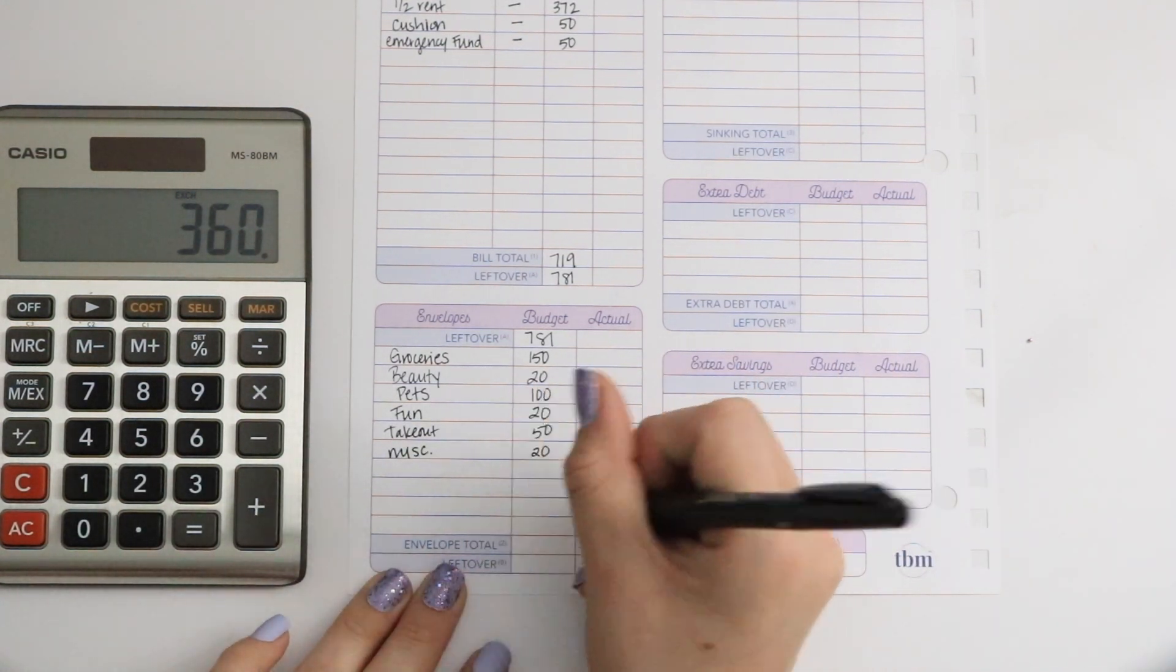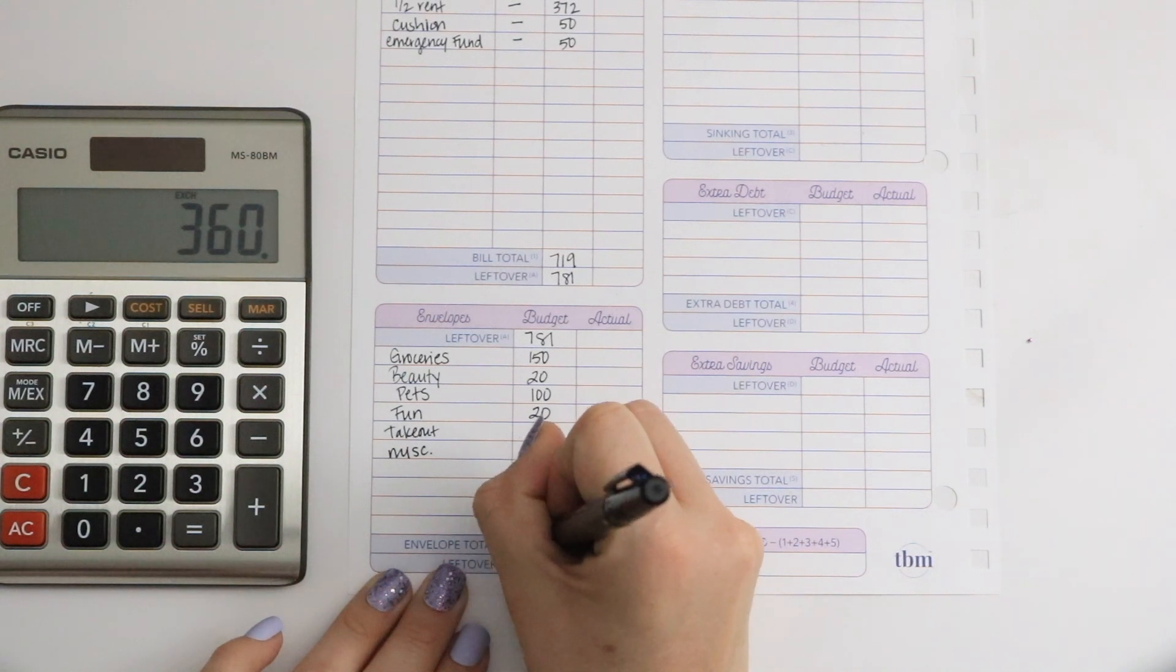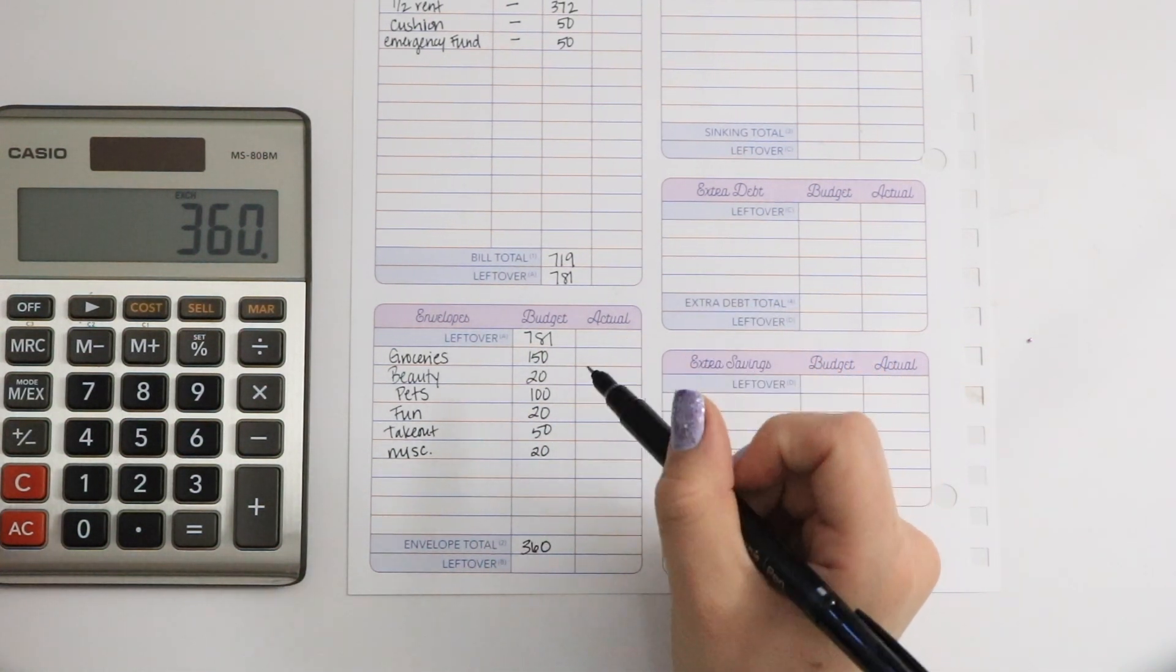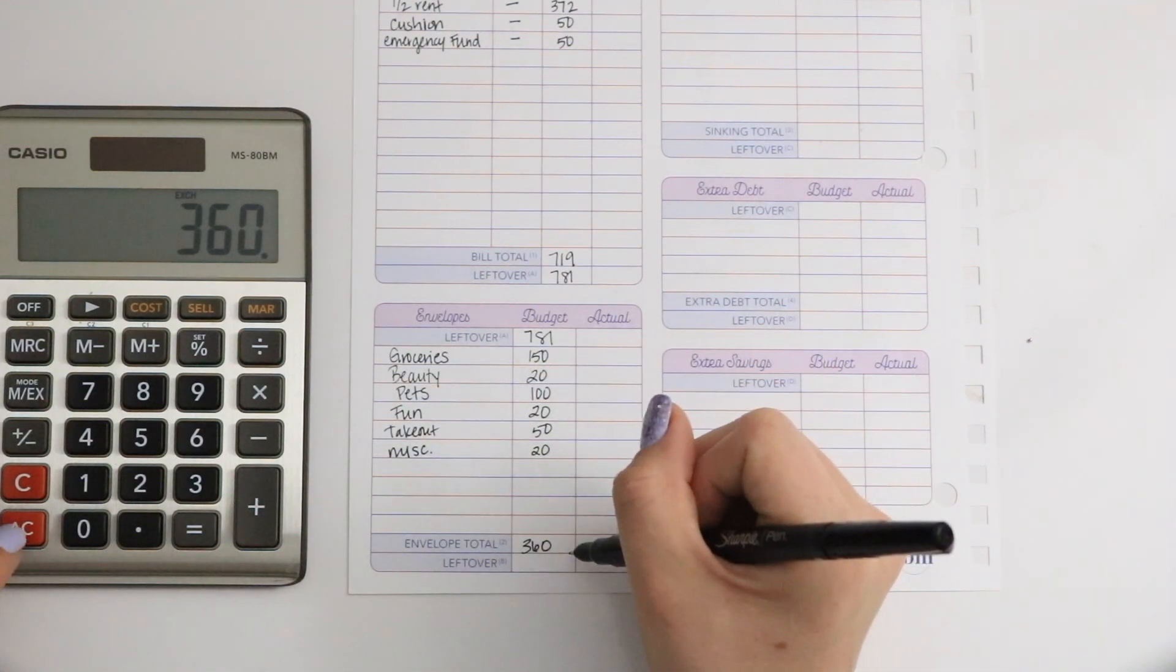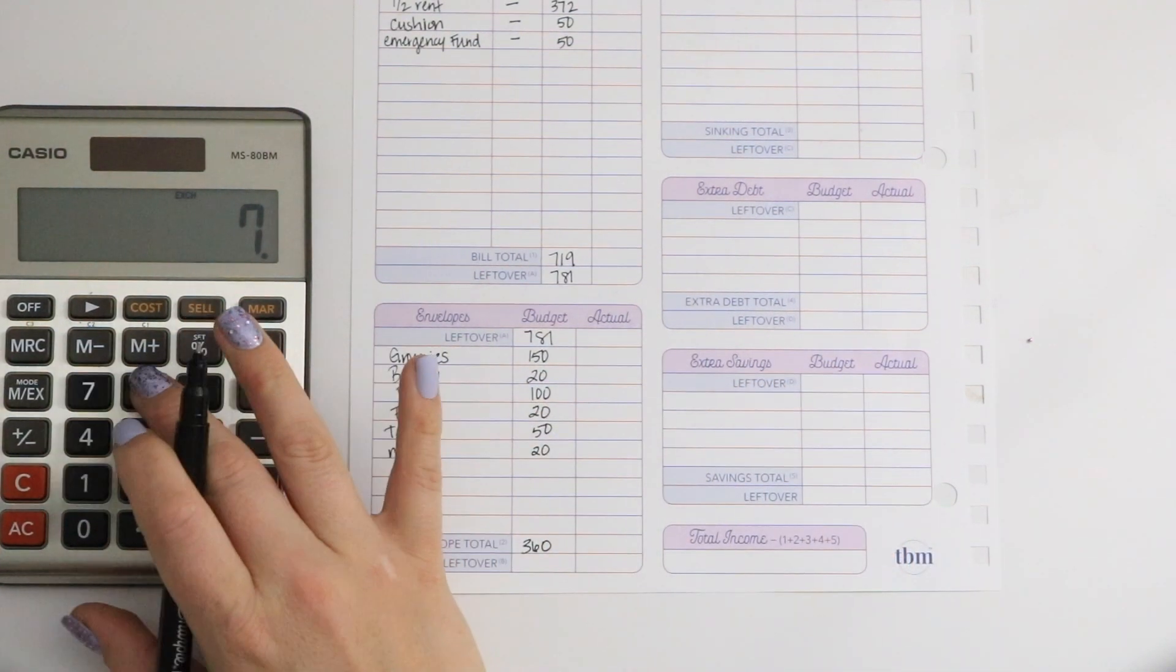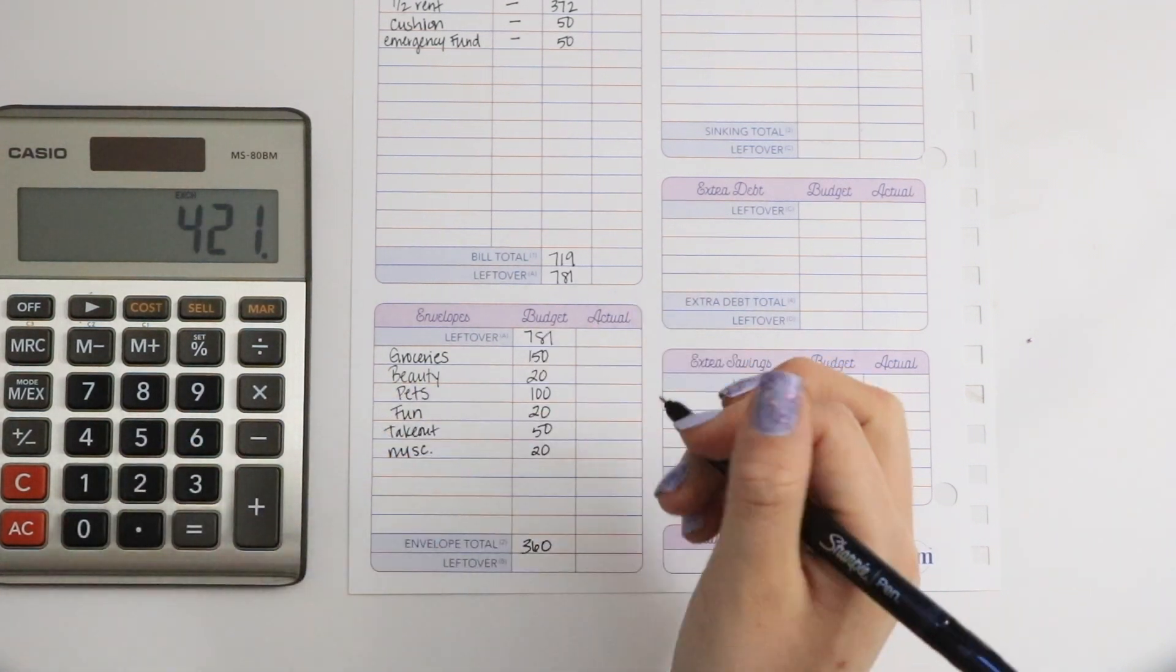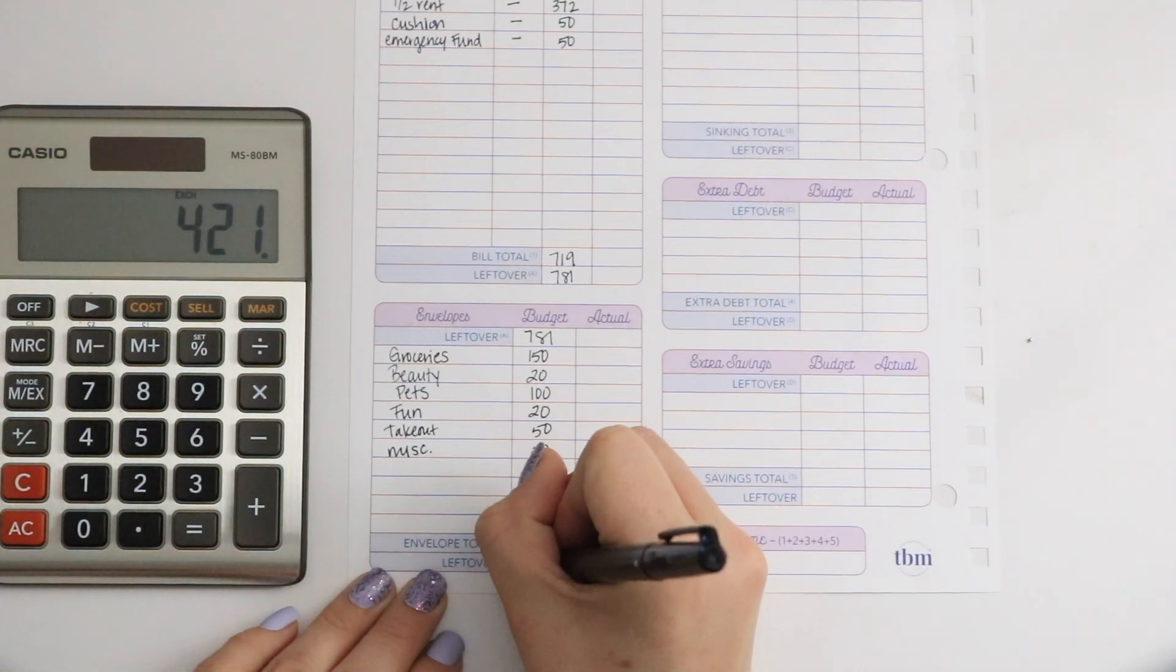So our envelope total is $360. Now I'm going to subtract our leftover and our envelope total, which comes up to $421.